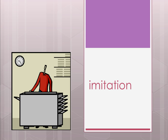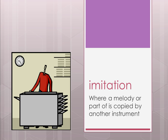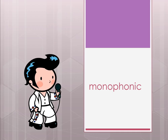The first term is imitation — represented by a photocopier — because it's where a melody or part of a melody is copied by another instrument. An example would be if you hear someone singing and backup singers come in and sing parts of the same melody. That's imitation: where a melody or part of it is copied by another instrument at the same time.